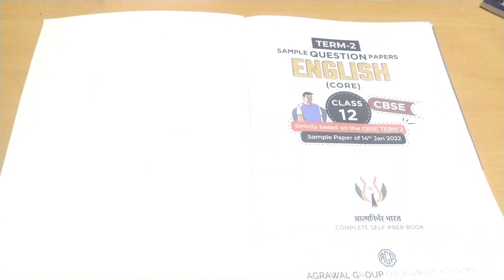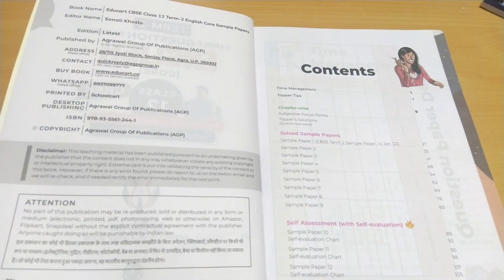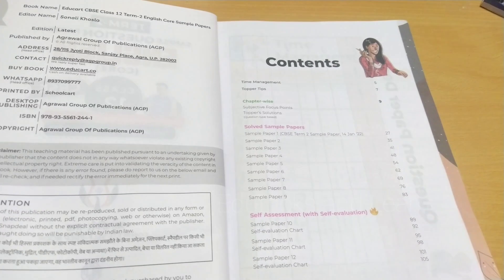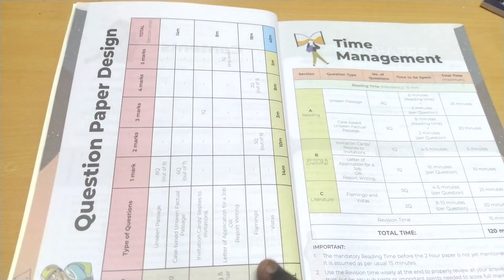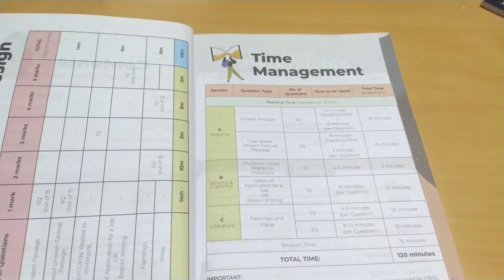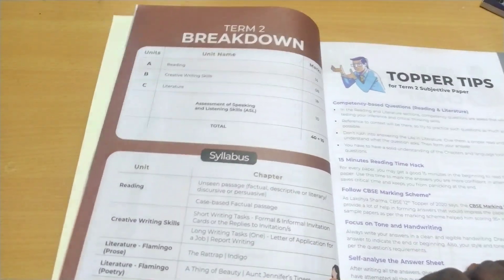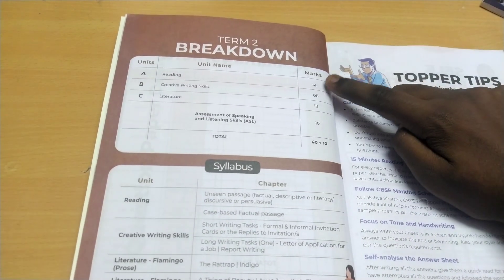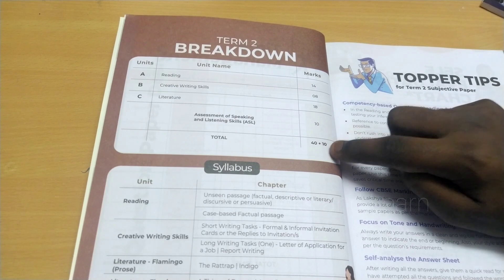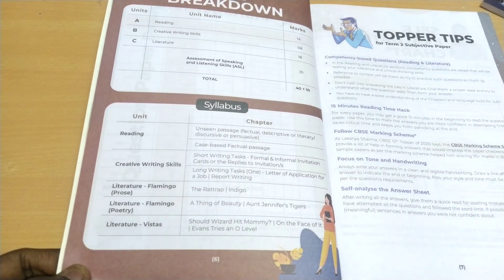Inside this book, they first give the contents. They have given 12 sample papers with 3 self-assessment sample papers; answers are available in online PDF form. Then they give the question paper design, time management for how much time to spend on each question, the Term 2 breakdown of the complete syllabus, section-wise marks division, and the deleted portions.